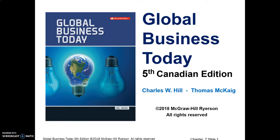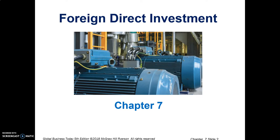Hello students, and welcome to our discussion of Chapter 7, Foreign Direct Investment. This is the first chapter of the second half of the course. Chapter 7 deals with foreign direct investment — money, capital, resources going from one country or one firm to a firm or business in another country. This chapter attempts to address the question of why firms invest in foreign markets and the reasons they make those expansion decisions. We look at a few options they may have and a couple of theories as well.